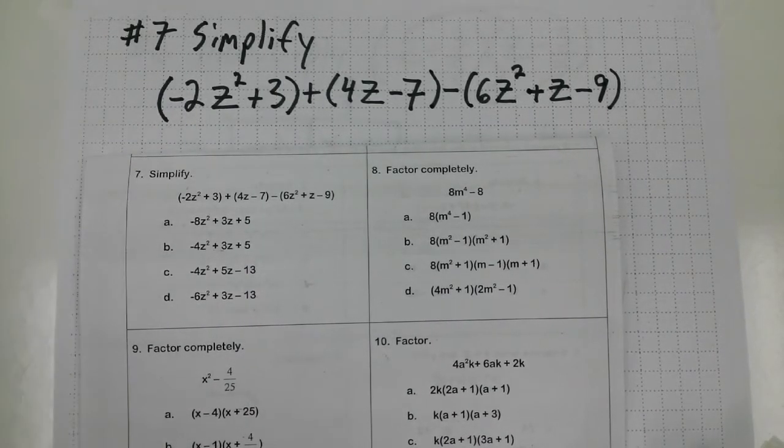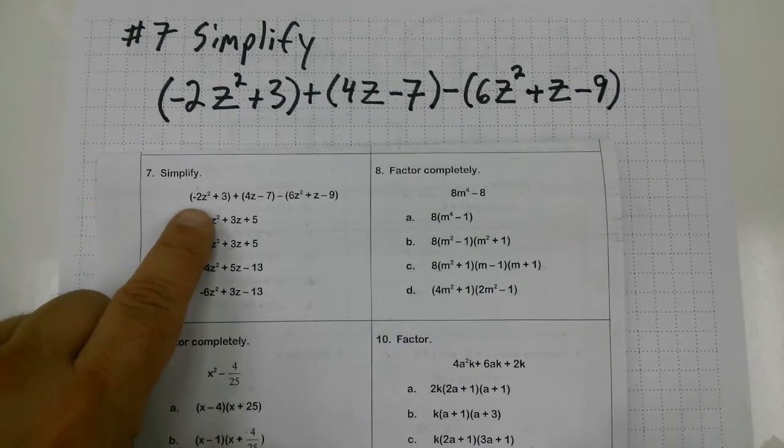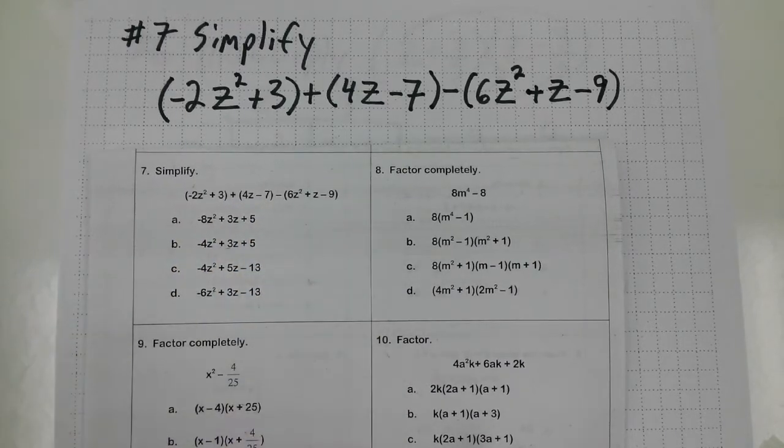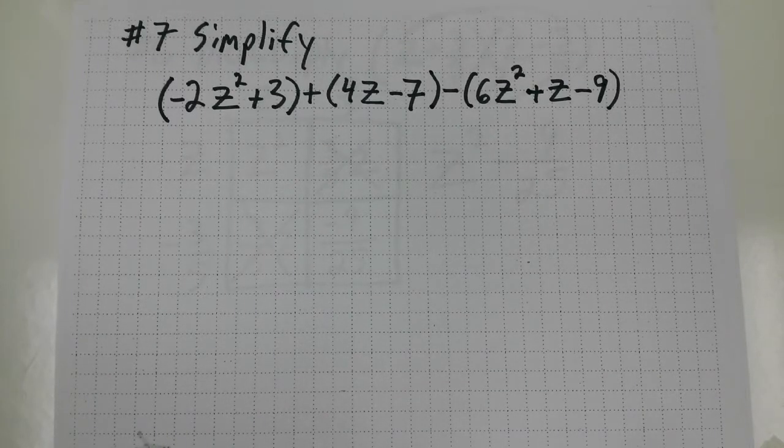Number seven from the PERT practice test asks me to simplify this big long expression. It's a pretty long problem, and a lot of people say the PERT does that—it gives you these really long expressions and just wants you to know how to simplify them.